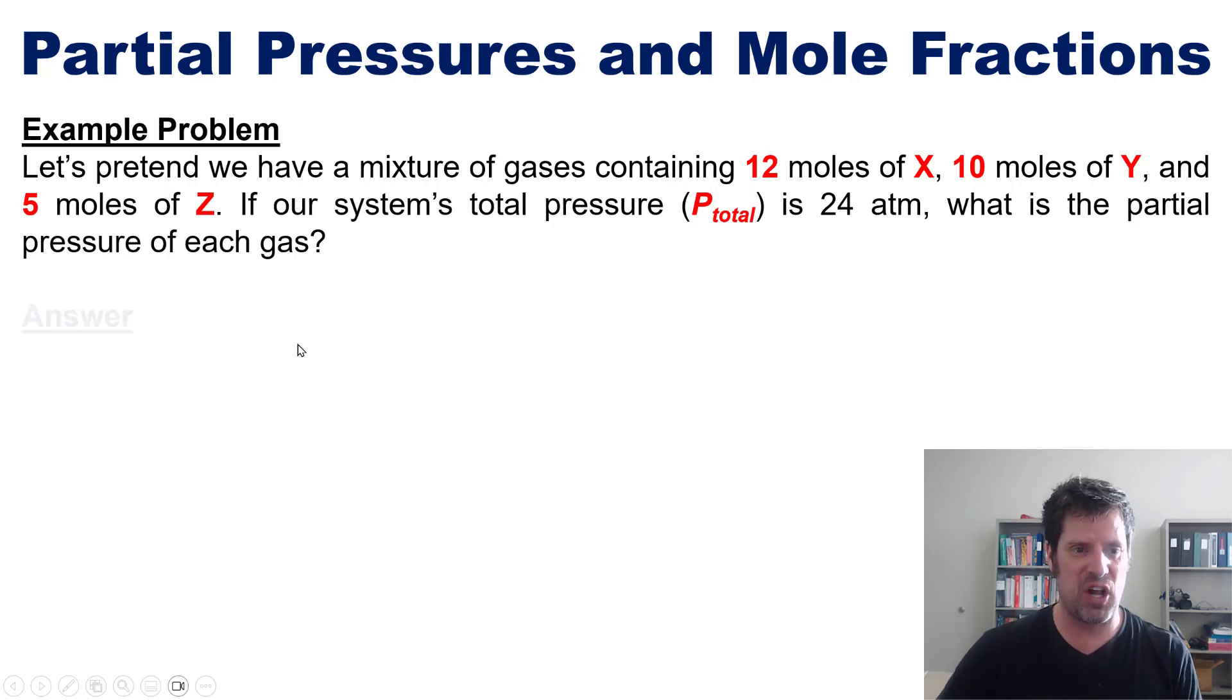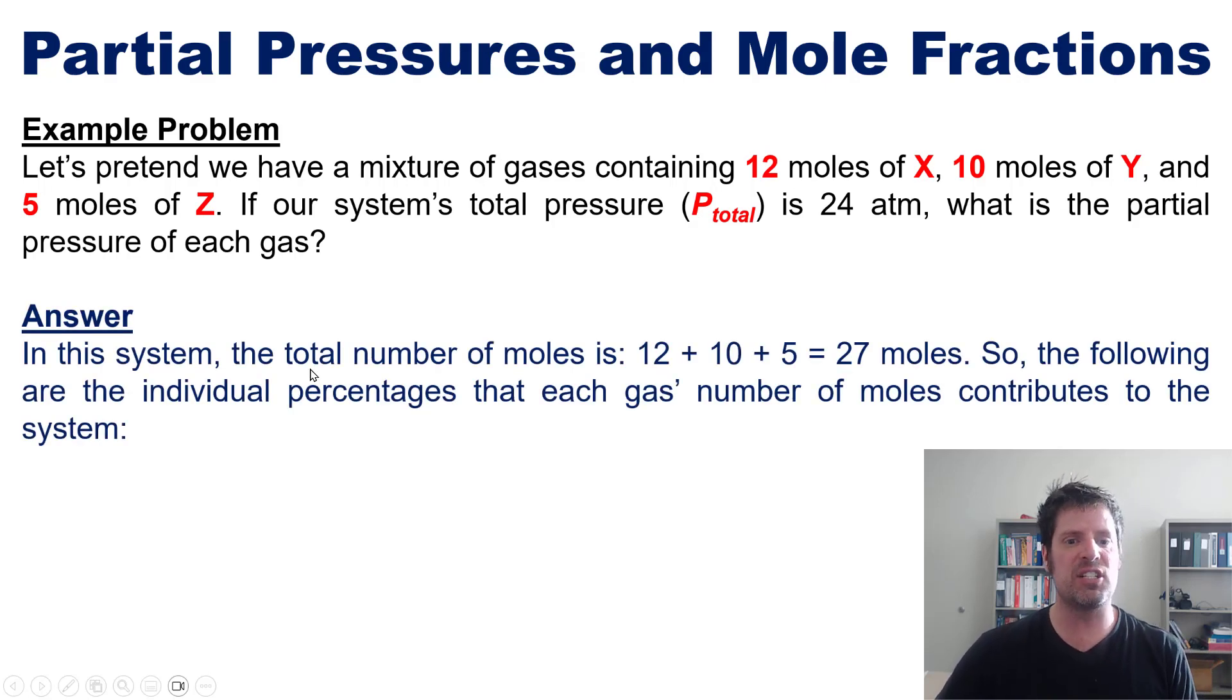Okay here's how we solve this. First in this system you can see that the total number of moles is 12 plus 10 plus 5 equals 27 moles of total gases X, Y, and Z. So the following are the individual percentages that each gas's number of moles contributes to the system. For example, gas X has 12 moles of the total 27 in the system. Thus its percentage is equal to 44 percent.